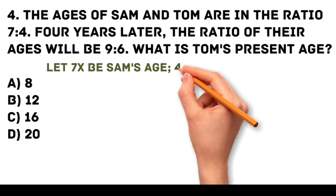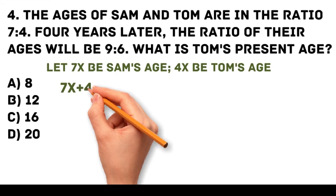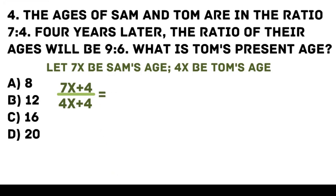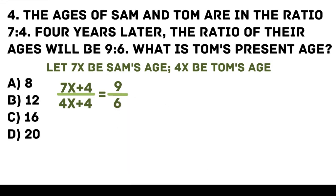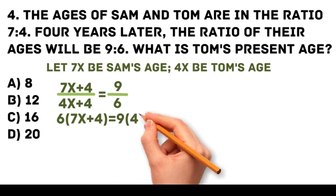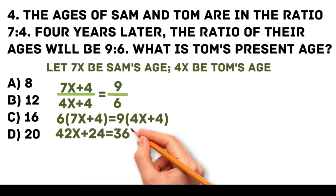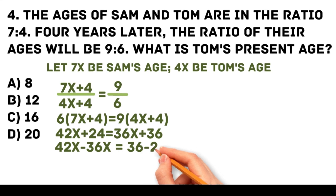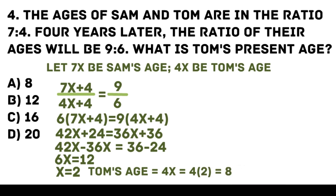Let 7x be Sam's age and 4x be Tom's age. To convert the given — 4 years later — into an equation, we have (7x plus 4) over (4x plus 4) equals 9/6. By cross multiplication: 6 times (7x plus 4) equals 9 times (4x plus 4). By distribution: 42x plus 24 equals 36x plus 36. Combining terms: 6x equals 12, so x equals 2. Therefore Tom's age is 4 times 2, which equals 8.